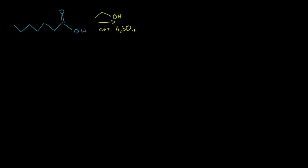Let's think about what might be happening. If we had a solution of this carboxylic acid here, we might as well name it just to get some practice. We have seven carbons, so this is heptan — and we don't write heptane because this is a carboxylic acid. It is heptanoic acid.